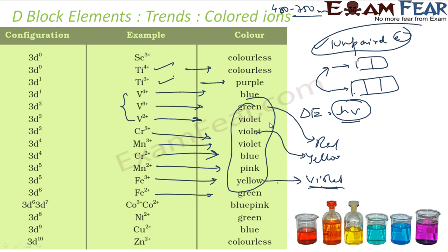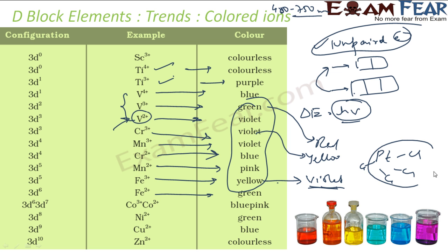The wavelength of the light absorbed also depends on the ligands attached to the metal. In aqueous solution, water molecules are the ligands. Ligands are molecules or ions that bind to the central metal to form a coordination complex. For example, if you have platinum (Pt) with chlorines attached, those chlorines are the ligands. So the color depends on both the charge of the ion and also on the ligands.